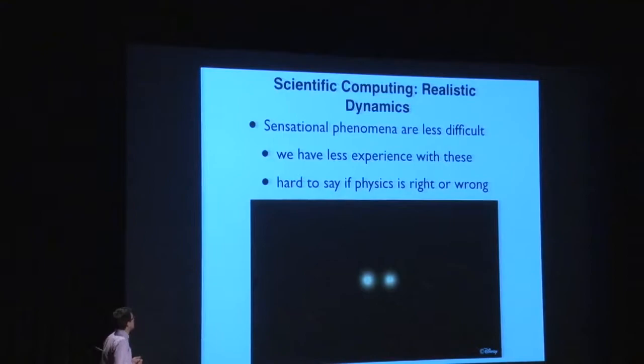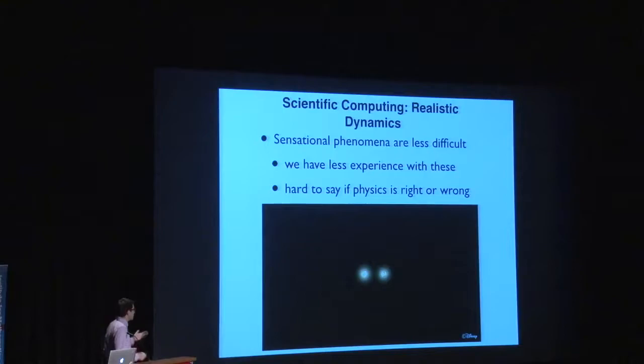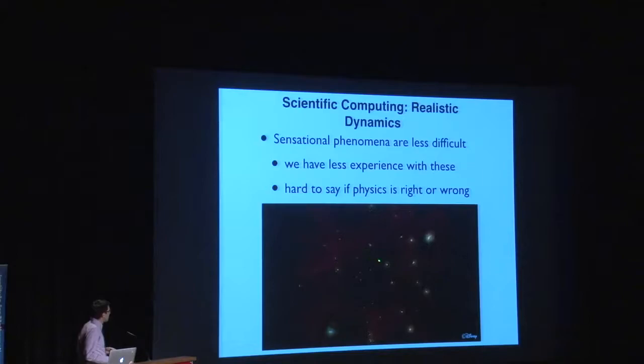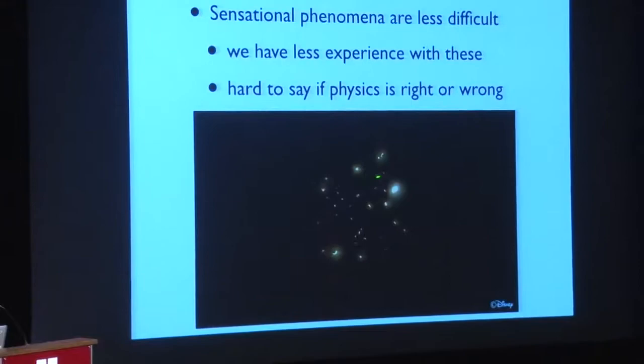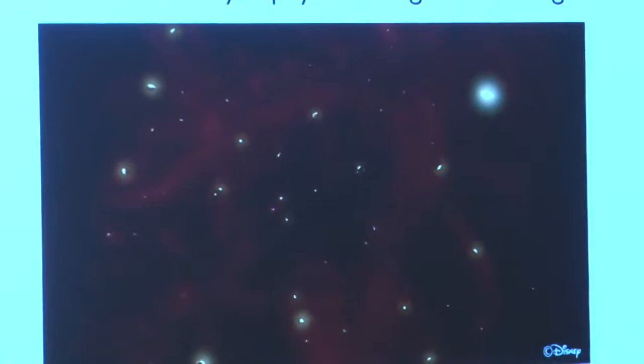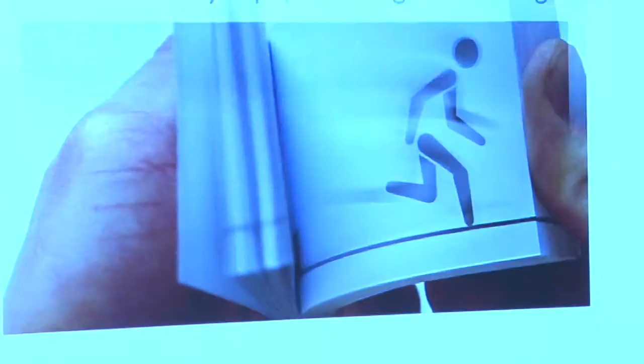To demonstrate the point: those aren't actually fireballs — they're snowballs we used for the movie Frozen, simulated in zero gravity with appreciable angular velocity, and they look like fireballs. You have a lot more leeway for things that are more sensational and that you don't see every day. Now let's talk about how we use discrete PDEs to make the movies.